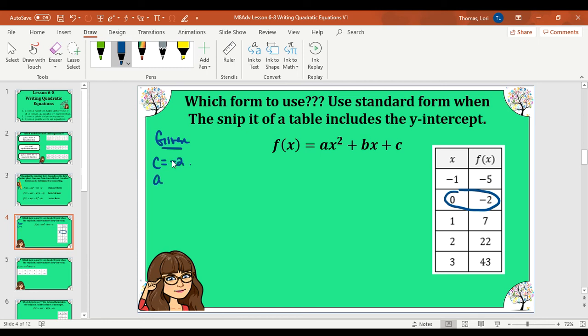We can find our a value by finding the second difference of our outputs and dividing it by 2. So from negative 5 to negative 2 was plus 3. From negative 2 to 7 was plus 9. From 7 to 22 was plus 15. And then from 22 to 43 was 21. So this first difference tells me it is not linear. Now we're going to see if there is a second difference. From 3 to 9 is going up by 6. 9 to 15 is plus 6. And 15 to 21 is plus 6. So our second difference is 6. So to get your a value, you take your second difference and you divide it by 2. So our a value is 3.